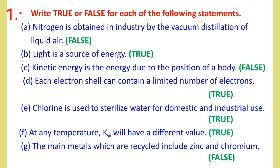Number E: The main metals which are recycled include zinc and chromium.